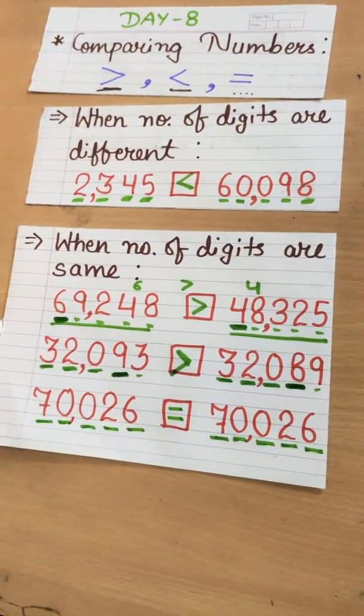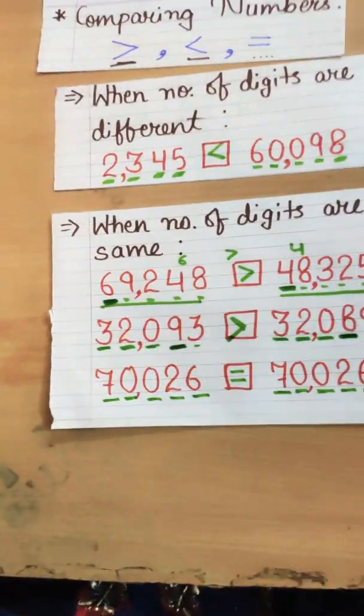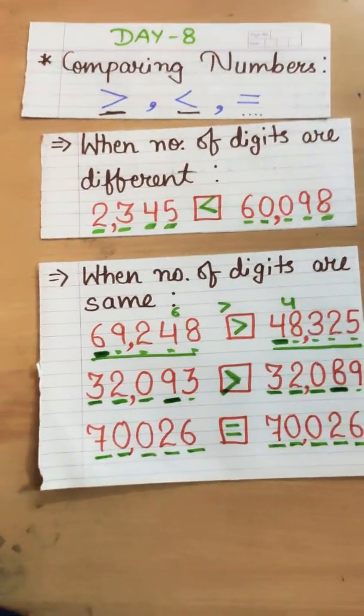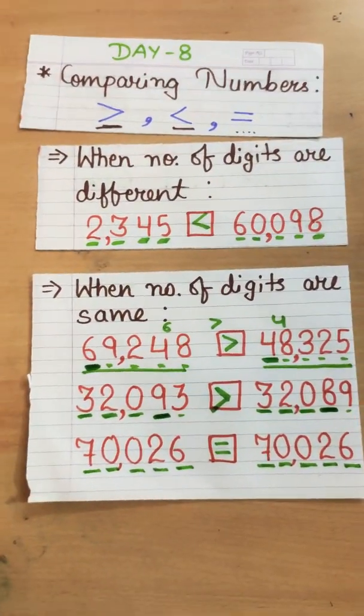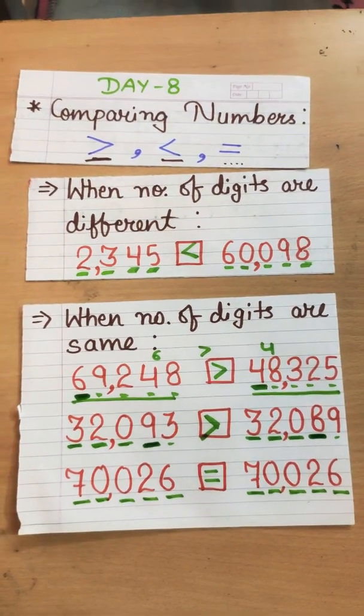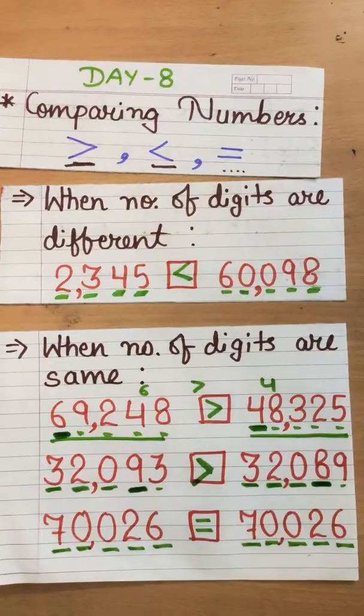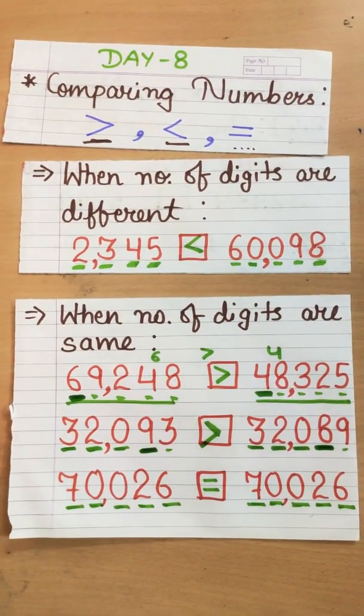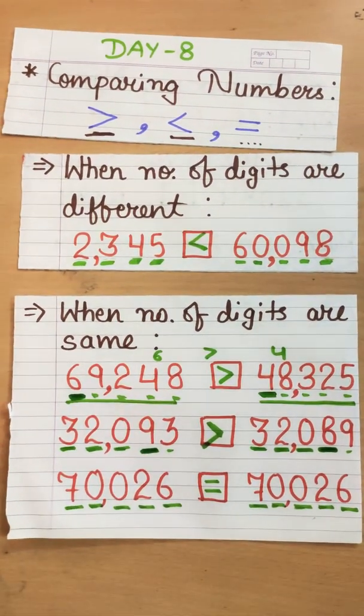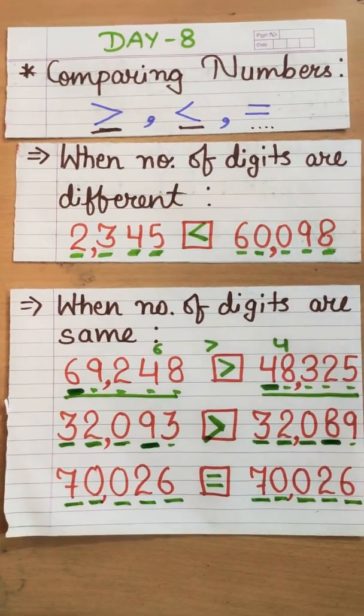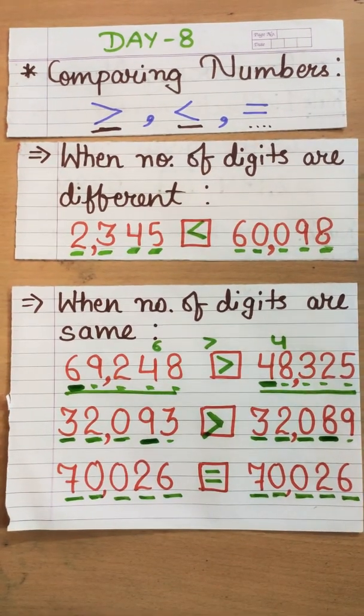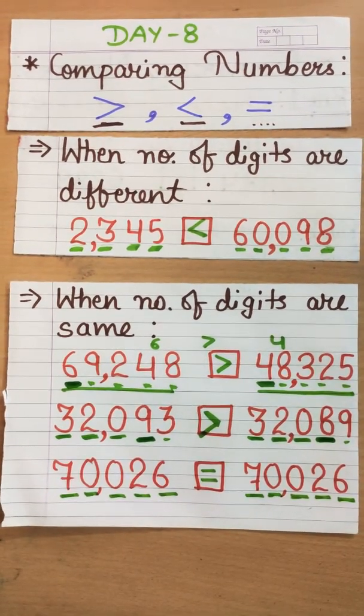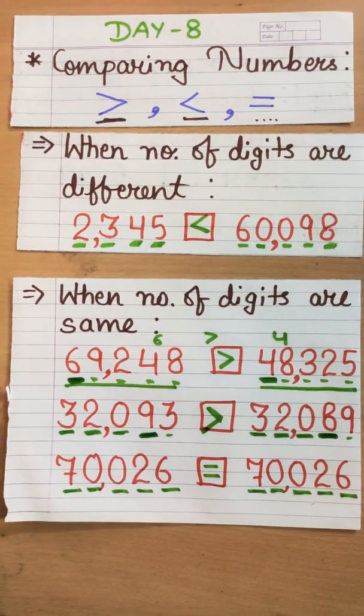So, hence we got to know how to compare numbers when number of digits are different and when number of digits are same. Hope you like the video. So, press the bell icon to subscribe it and like the video to get more notifications and regular updates. Thank you. I hope you would be able to do more questions related to comparing numbers. So, a PDF is attached with the video. Kindly check it for the class work as well as your homework. Thank you.